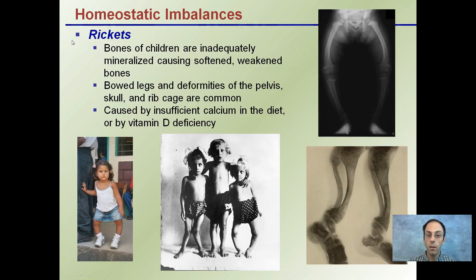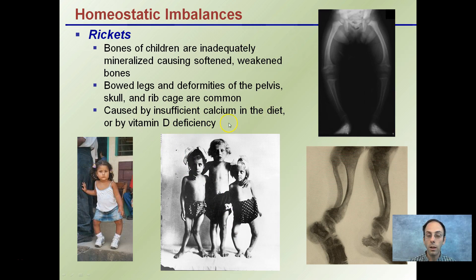Rickets is an extreme case of this, occurring in children. The bones of children are inadequately mineralized, causing softened and weakened bones. Bowed legs and deformities in the pelvis, skull, and ribcage are common with those affected by rickets. It's caused by the same things — insufficient calcium in the diet or vitamin D deficiency. Remember, insufficient calcium could be just the total amount of calcium or the amount of bioavailable calcium in the diet.